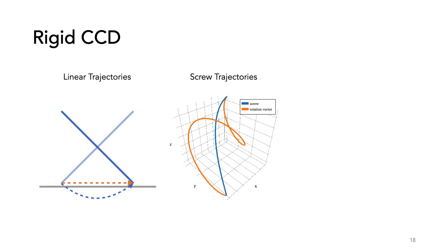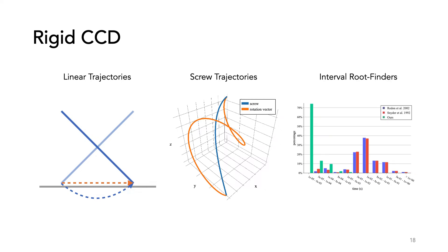What about existing methods for rigid CCD? A lot of them assume specific trajectories that do not align with our rotation vectors. In the middle here, we plot a standard screw trajectory between two rotation vectors compared to interpolating the rotation vectors as we do. Using the screw trajectory could miss collisions because it is different than the actual update to our variables. There are a couple of methods based on interval root finding capable of handling general trajectories, but they can be very slow.